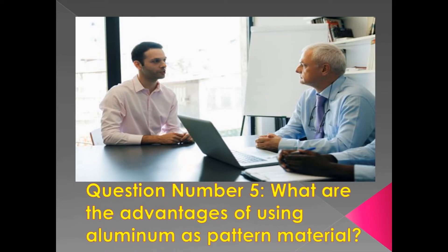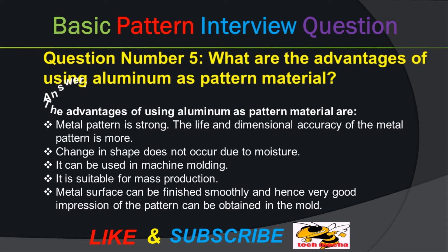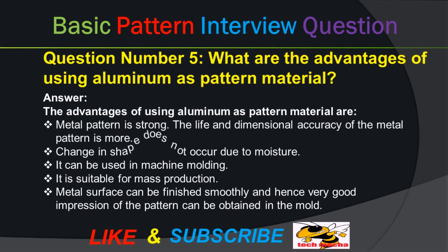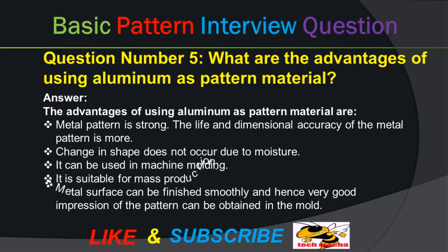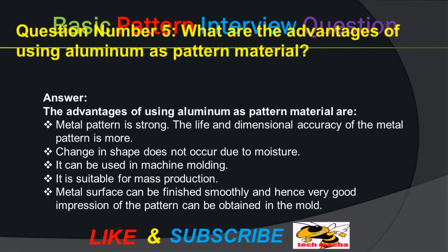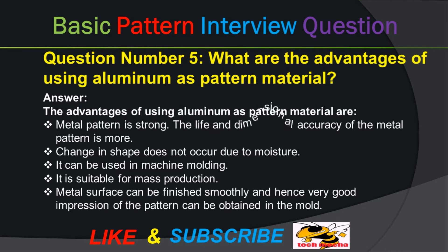Question number five: What are the advantages of using aluminum as pattern material? Answer: The advantages are: metal pattern is strong; the life and dimensional accuracy of the metal pattern is more; change in shape does not occur due to moisture; it can be used in machine molding; it is suitable for mass production; and metal surface can be finished smoothly, giving a very good impression of the pattern in the mold.